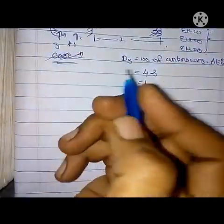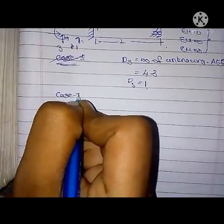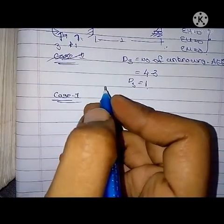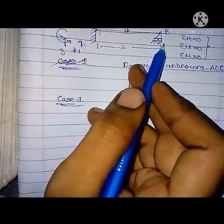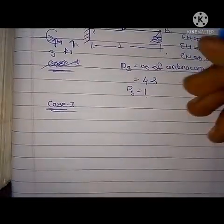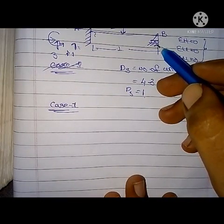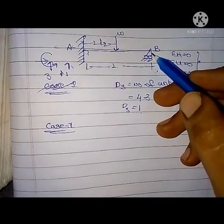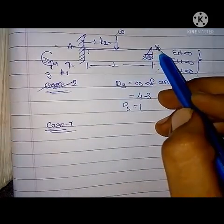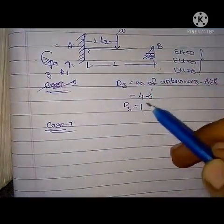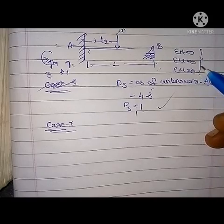We will analyze Case 1. We will remove the prop reaction. In reality we have that reaction, but we remove it as an assumption. By removing it, we get three minus three equal to zero, which makes this a statically determinate structure.